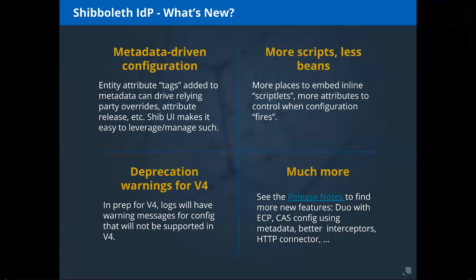Other IDP 3.4 additions: support for Duo with the ECP flow; a SAML-metadata-like approach to configure which services your CAS endpoints support instead of a service registry file; enhanced interceptors with more flexibility and the ability to enforce multiple authorization rules in a single interceptor; and a new data connector for HTTP, so you can call out to a web service to bring in an attribute.